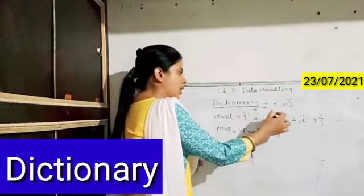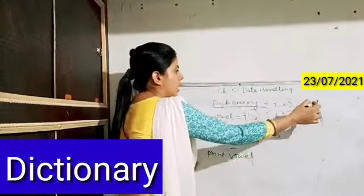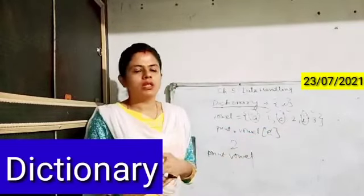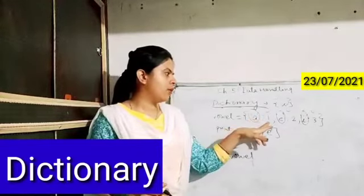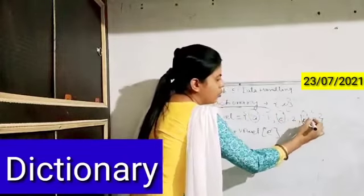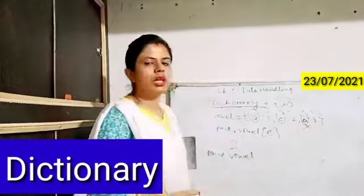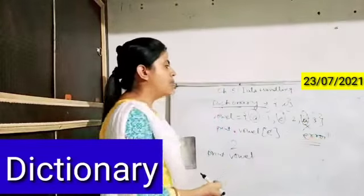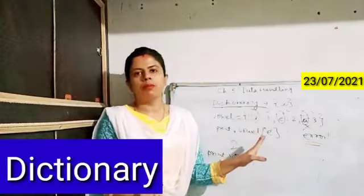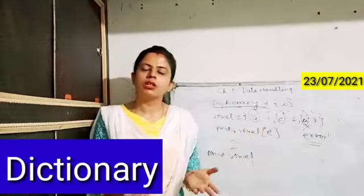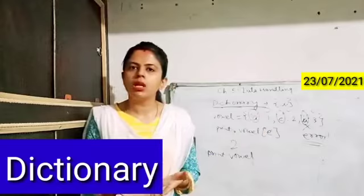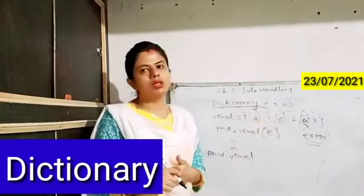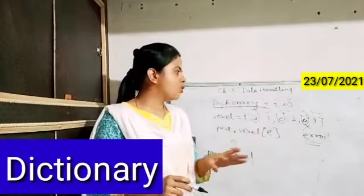The keys of a dictionary cannot be duplicated. For example, if you have written 'a': 1, you cannot also write 'a': 3 — this will give an error. However, the values can be the same, just as in an English dictionary different words can have the same meaning. So keys cannot be replicated but values can be the same.